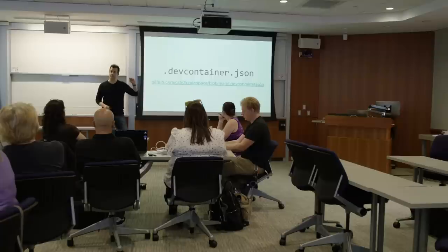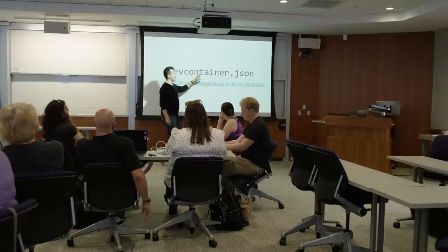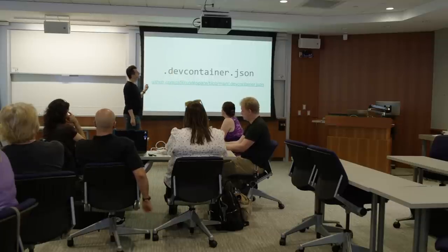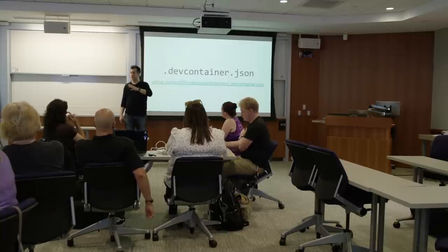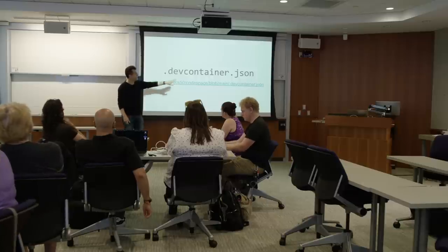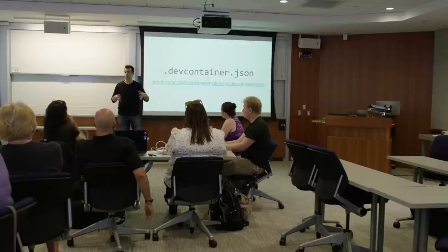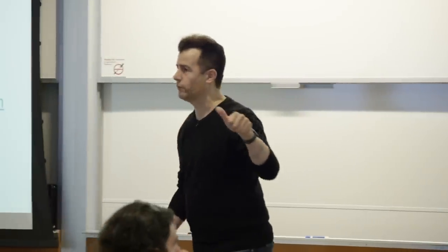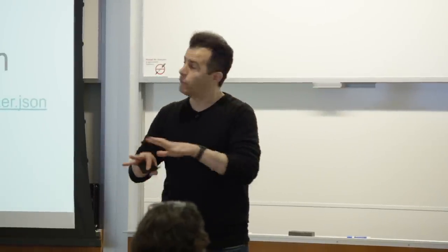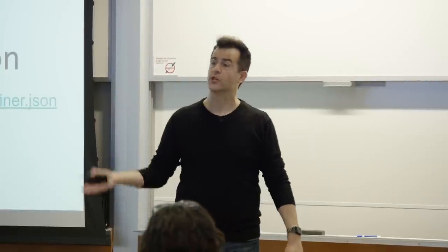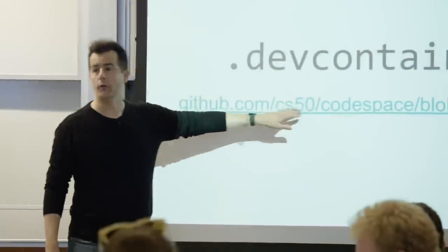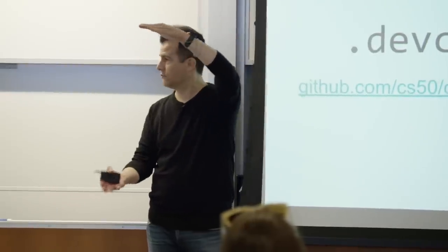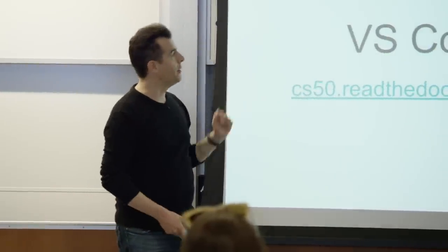There's one other file in this world of Codespaces — a devcontainer.json file. This is a pretty common popular standard, largely in the Microsoft ecosystem and beyond, for configuring details about a Codespace or container. It's in this file that you mention which Dockerfile or files you want to use, and where you pre-install VS Code extensions — things like support for Python, C, CS50's Duck, and so forth. If there are extensions you yourself like to use and want your students to use, you could add those to a file like this to pre-install everything. You don't have to give students a list of 10 steps just to get up and running — it's all automatable.